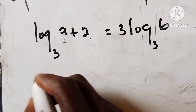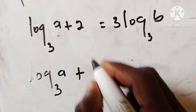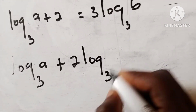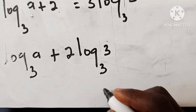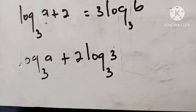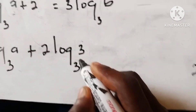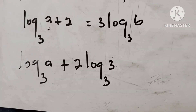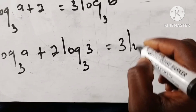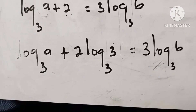To bring this 2 into the logarithm family without changing the nature of the question, we introduce it as log(3) base 3, which equals 1 by definition. So 2 times log(3) base 3 equals 2 — we are just multiplying by one. This gives us log(a) base 3 plus 2·log(3) base 3, all equal to 3·log(B) base 3. Now the 2 has joined the logarithm family.